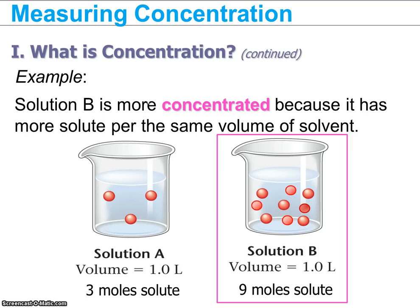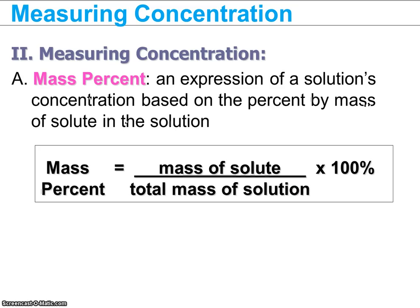If we wanted a quantitative measurement of concentration, one way we can measure that is with something called mass percent. Mass percent you have done before — it is very much like percent composition, it is percent by mass. Percent is always the part over the total. So in a solution, the part we're concerned about is what portion of the solution is made of solute out of the total solution.